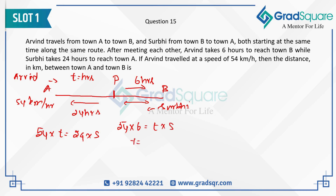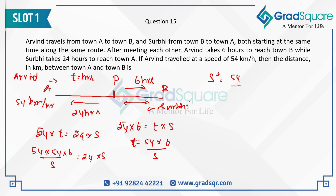From the equation T × S = 54 × 6, we get T = (54 × 6) / S. Substituting into the earlier equation: 54 × (54 × 6 / S) = 24 × S. Simplifying gives S² = 54² / 2², so S = 54 / 2 = 27 km/h — Surabhi's speed.